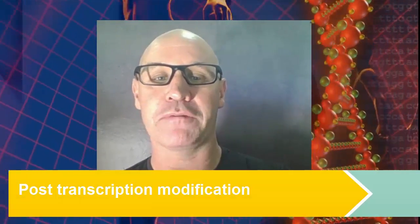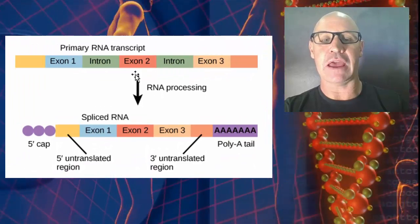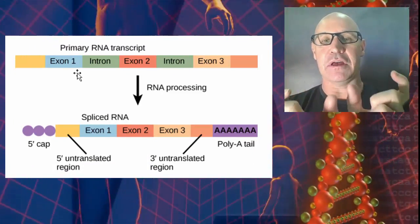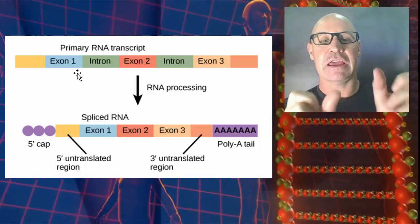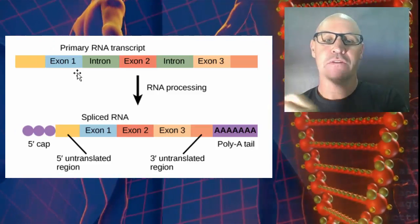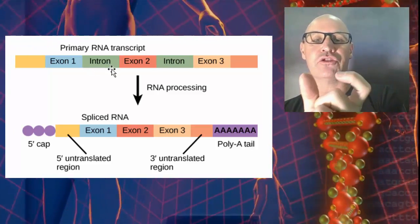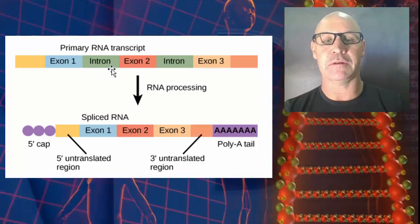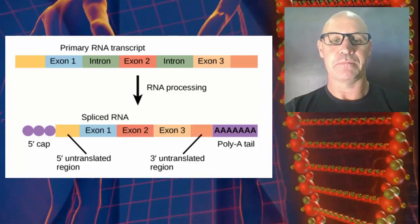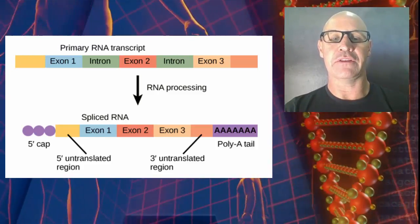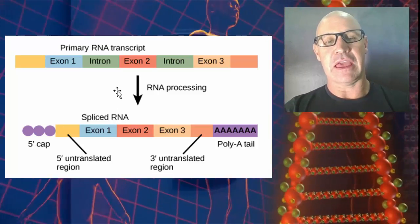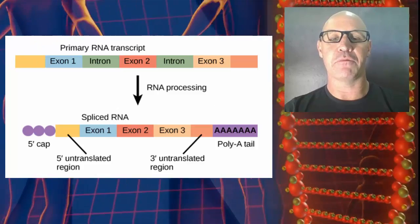The next part of the process is that we need to modify the mRNA post-transcription. This is called post-transcription modification. If you imagine this is a piece of RNA, it contains these things called exons. Exons are the parts of the mRNA that actually have nucleotides that code for the protein. The introns are additional nucleotides that don't actually code for the protein. In post-transcription modification, the introns are removed and it's spliced together.